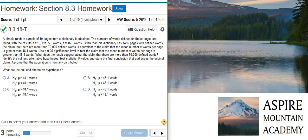...is equivalent to the claim that the mean number of words per page is greater than 48.1 words. Use a 5% significance level to test the claim that the mean number of words per page is greater than 48.1 words. What does the result suggest about the claim that there are more than 70,000 defined words? Identify the null and alternative hypotheses, test statistic, p-value, and state the final conclusion that addresses the original claim. Assume that the population is normally distributed.